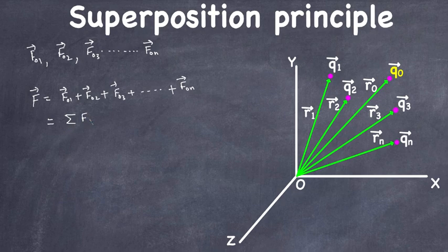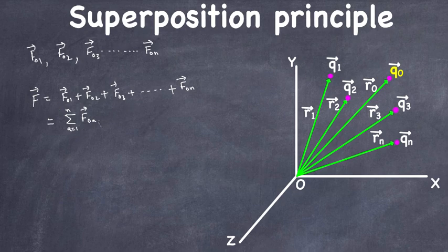We write the force F naught, with index 'a' going from 1 to N. That way we can write F01, F02, and keep changing the 'a' value until we reach F naught N.